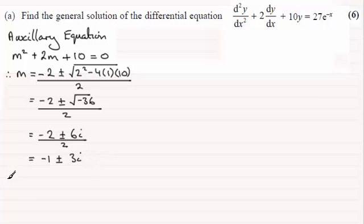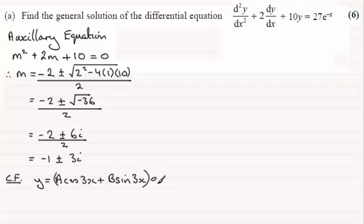So, that means that the complementary function, let's just abbreviate that to CF, is going to be y equals, now when you've got imaginary roots here in the auxiliary equation, remember the form is going to be a cosine of, and we pick up on this value here, 3, so it's going to be 3x plus b sine 3x. And all of this is multiplied by e to the power whatever you've got here, in this case it's minus 1, e to the power minus x. So that's our complementary function.